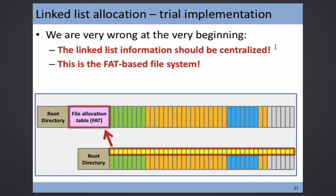FAT is an aggregate of the next block information for all blocks. So why do we need to centralize that? The previous example is just like what we have nowadays — the method itself is the same — but why has it become widely deployed? The trick is the data is centralized.